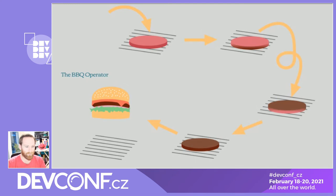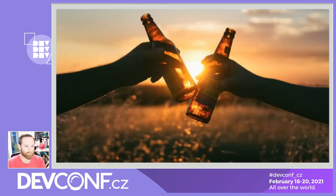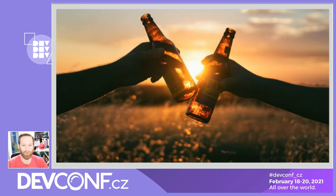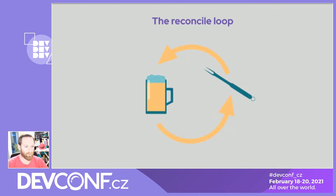If there's nothing to do, what does the barbecue operator do? Relaxing, drinking beer, doing nothing — but observing closely the state of all the resources it's managing. As a pit master, you can't just all day long turn around the patties; you need to think, observe, and only take action when there's really something to do. This is essentially what we call in Kubernetes operators — this is what we call the reconcile loop.